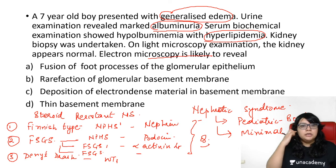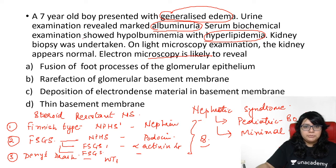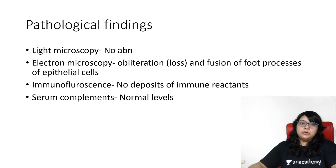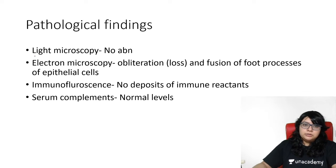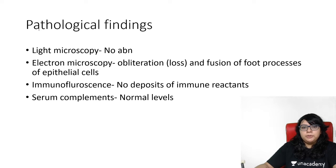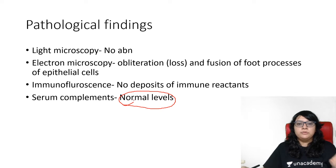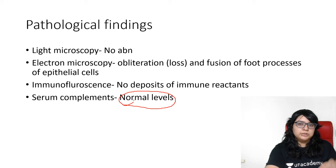So the answer is option A — fusion of the foot processes of the glomerular epithelium. Coming to pathological findings: on light microscopy it is absolutely normal, which was already stated in the question. On electron microscopy, there is obliteration and fusion of the foot processes of the epithelial cells. Immunofluorescence shows no deposits, and serum complement levels are absolutely normal.